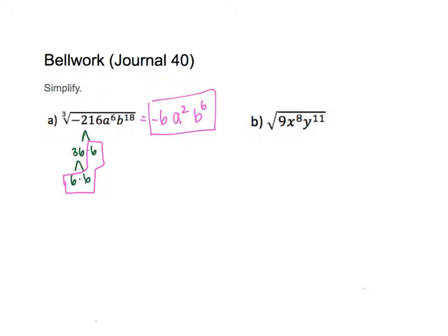Let's take a look at problem B. For B I have a square root, so I know there is a 2 as the root index — I like to write that 2 to remind me what number I'm dividing by. The square root of 9 is just 3, so I have a 3 outside. Now approaching the variables: x to the 8th power — 8 divided by 2 gives me 4, so x to the 4th power.